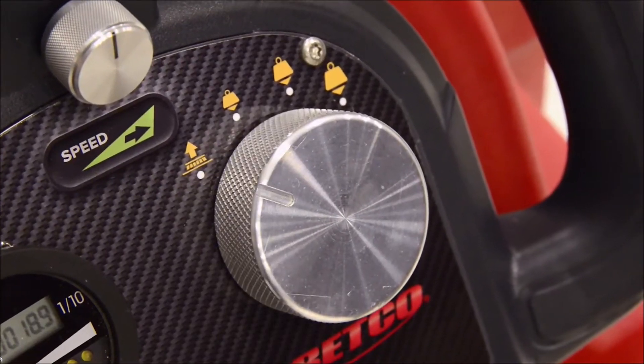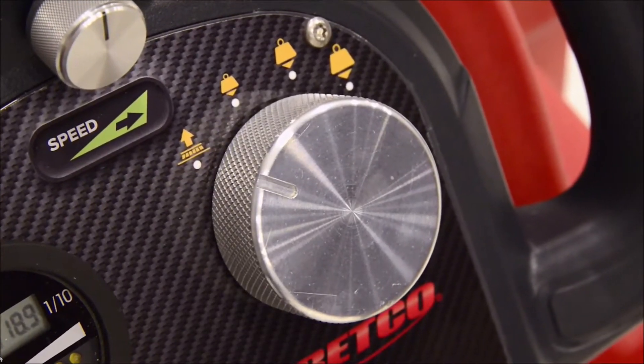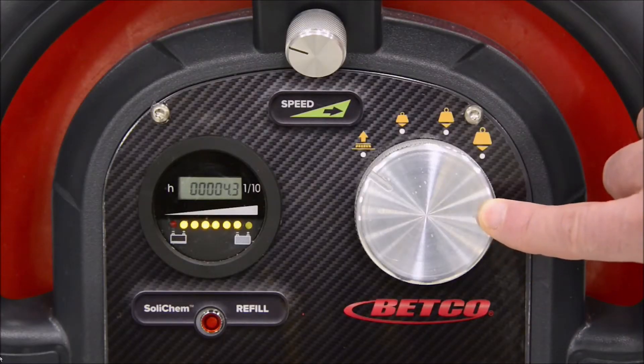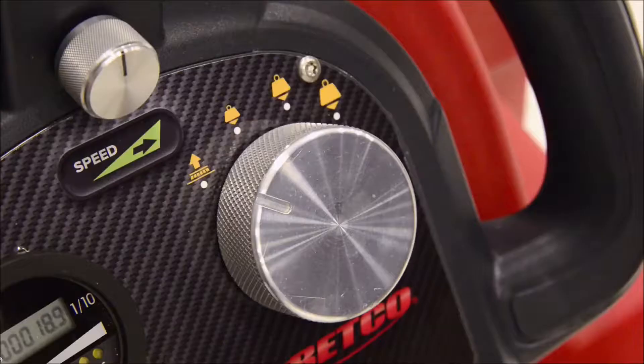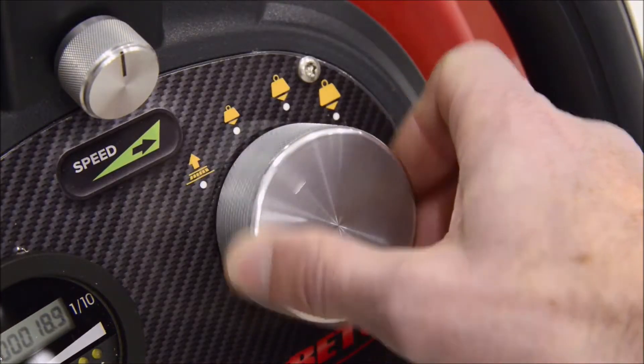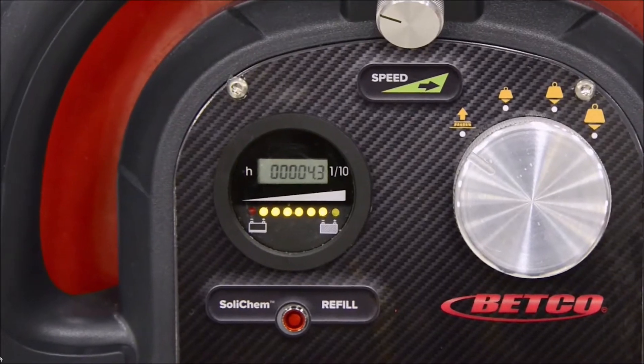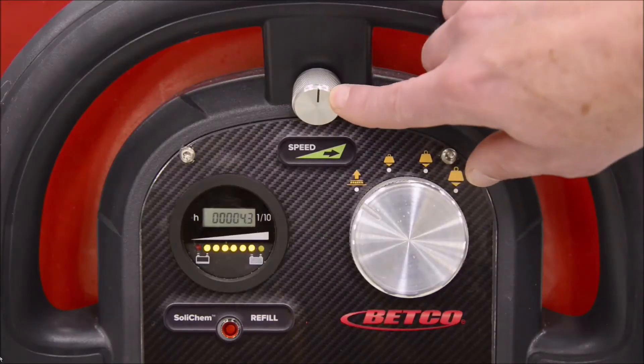The first part will focus on the standard controls as shown here. Here is an overview of the standard controls configuration. On the upper console, you have the scrub deck position knob, which has four positions: the up or transport position and low, medium and high down pressure positions. Battery gauge and hour meter and speed control knob.